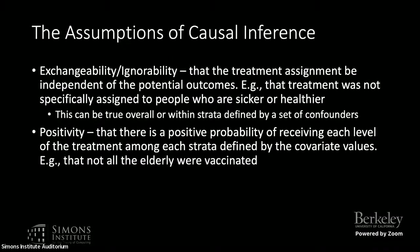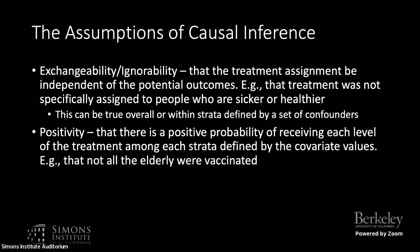Causal identification relies on certain assumptions not easily met in observational studies. The first is exchangeability or ignorability — it means the study groups are comparable in regard to their potential outcomes. With observational data, that's not going to be true: people self-select or their physician makes decisions because of reasons related to their potential outcomes. We can still do causal inference if the assumption is met conditionally, after conditioning on some set of variables.